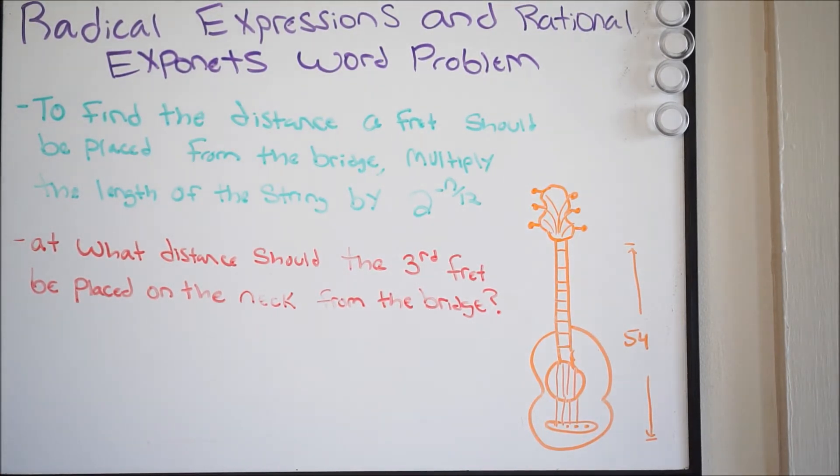It says, to find the distance a fret should be placed from the bridge, multiply the length of the string by, and they give you the following, 2 to the negative n over 12.